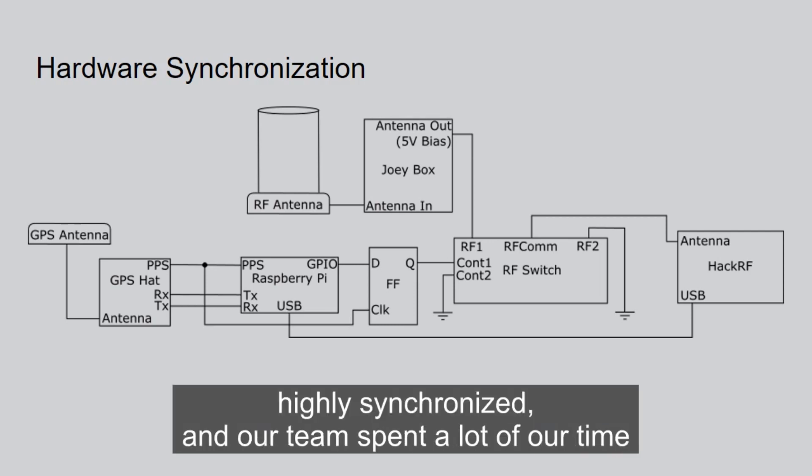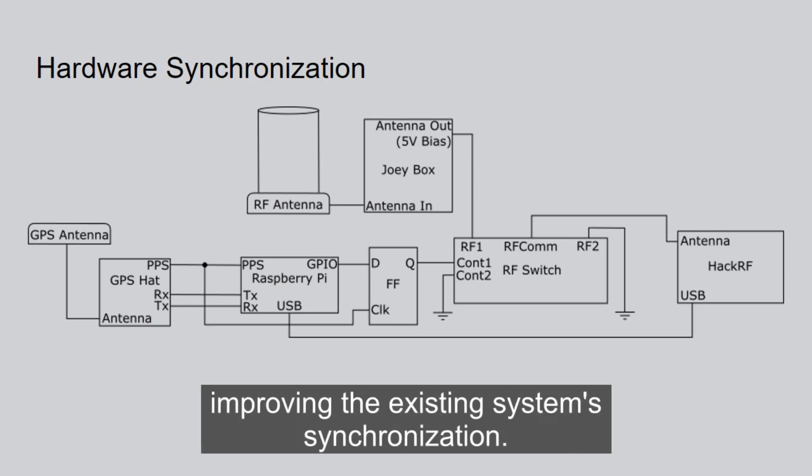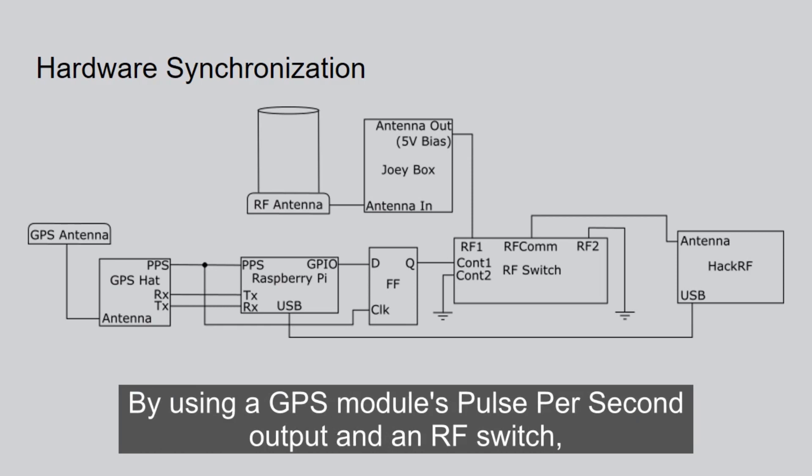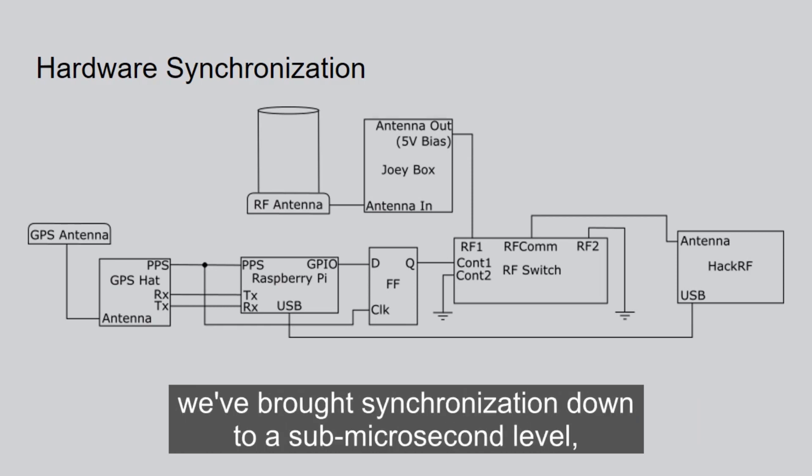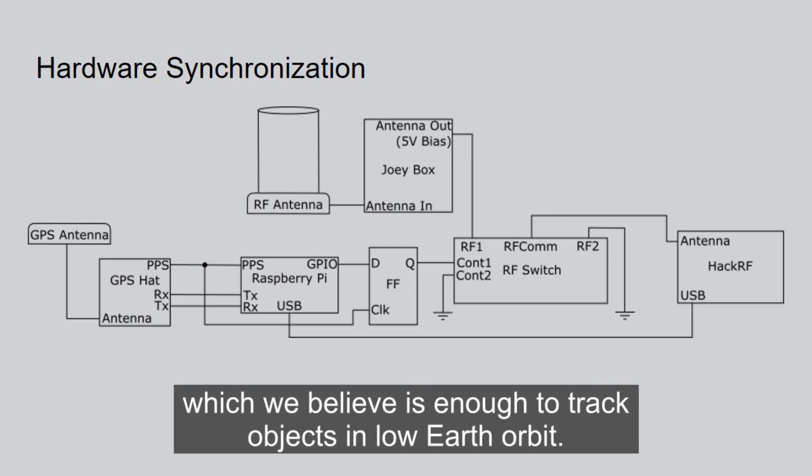This technique requires the stations to be highly synchronized, and our team spent a lot of time improving the existing system's synchronization. By using a GPS module's pulse-per-second output and an RF switch, we've brought synchronization down to a sub-microsecond level, which we believe is enough to track objects in low-Earth orbit.